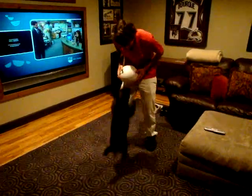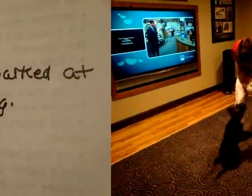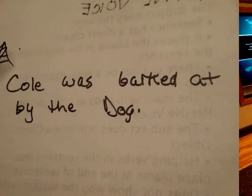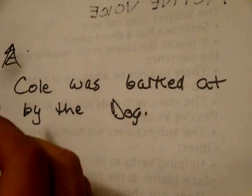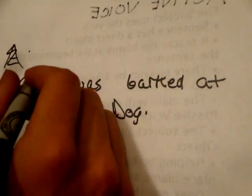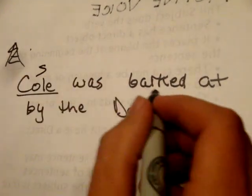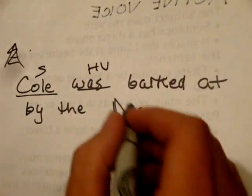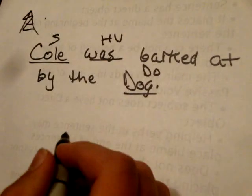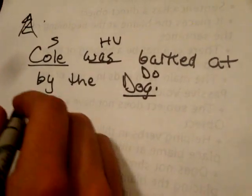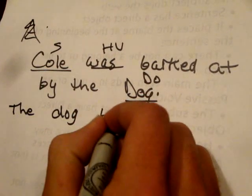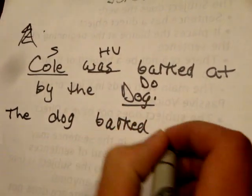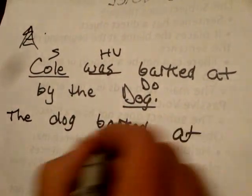'The dog barked at Cole.' An example of passive voice is 'Cole was barked at by the dog.' To change it, you would first identify Cole as the subject, 'was' as the helping verb, and dog as the direct object. To rewrite the sentence back to active voice, you would write it as 'The dog barked at Cole.'